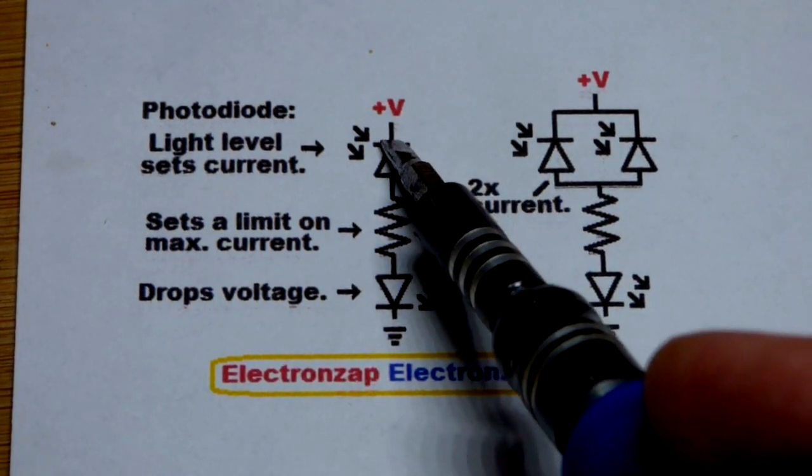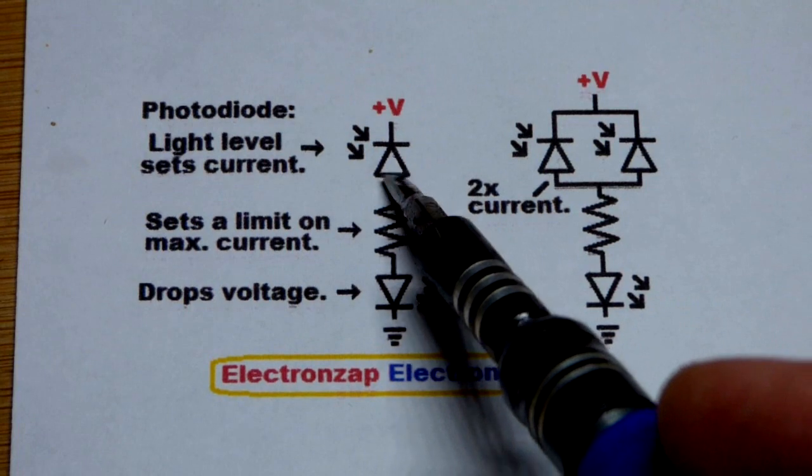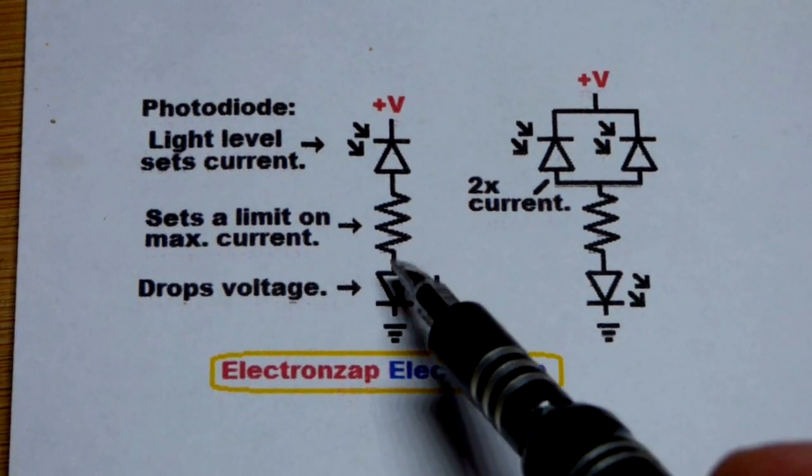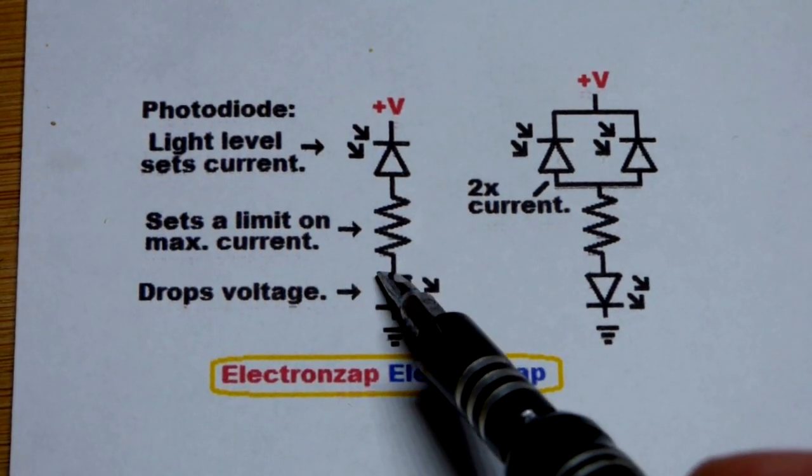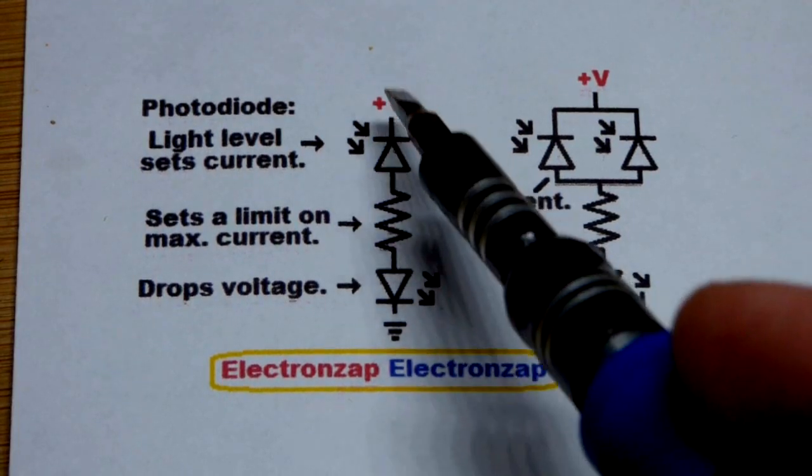Remember they are reverse biased. The cathode more positive, the anode more negative. For the LED to conduct you need it to be forward biased. Anode more positive, cathode more negative as we saw before.